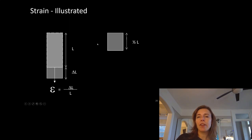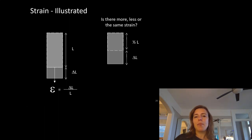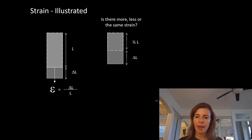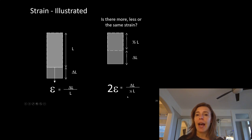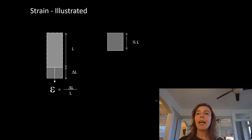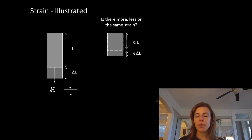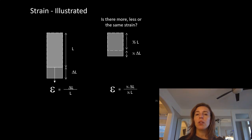Let's compare cases. If we had half the original length but the same deformation, do we have more or less strain? Delta-L divided by half the L is twice the strain — it was harder to make that deformation happen. If we had half the original length and it only deformed half as much, is it more, less, or the same strain? Half of delta-L divided by half the original length equals the same strain. Both objects have the same amount of strain being exerted on them.